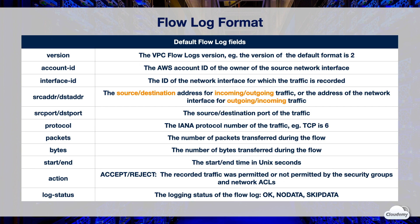Action is associated with traffic and is either accepted or rejected. Accept means the recorded traffic is permitted by the security groups and network ACL. Reject means the recorded traffic isn't permitted by the security groups and network ACL. Log status is the status of the flow log. OK means data is logging normally to the chosen destinations. No data means there was no network traffic to or from the network interface during the aggregation interval. Skip data means some flow log records were skipped during the aggregation interval — this may be because of an internal capacity constraint or an internal error.